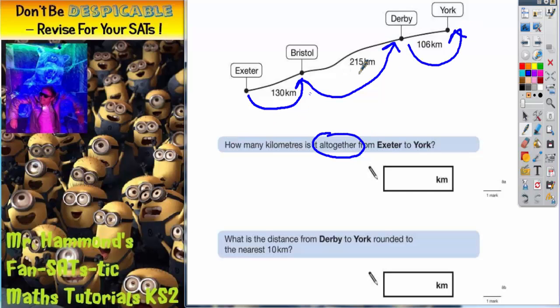So we've just got to add these three numbers together. So that's going to be a simple column method addition. So it's going to be 130, 215 and 106.